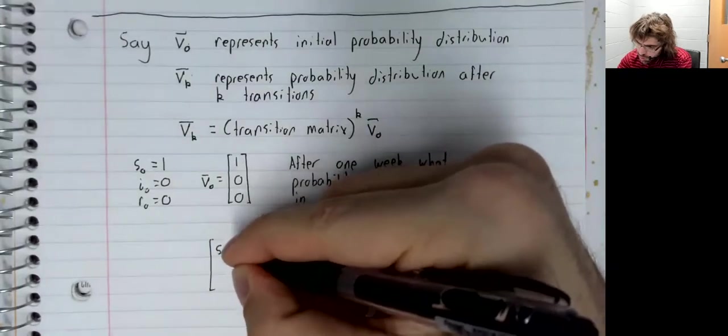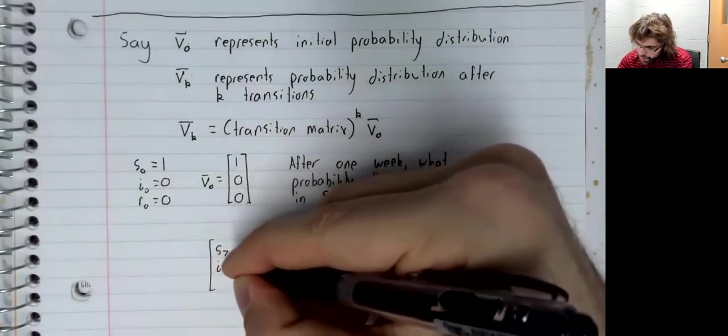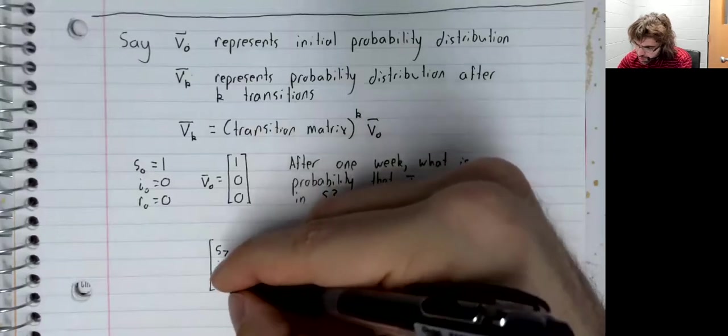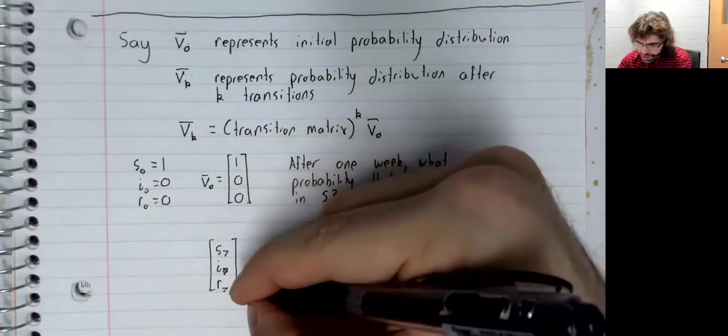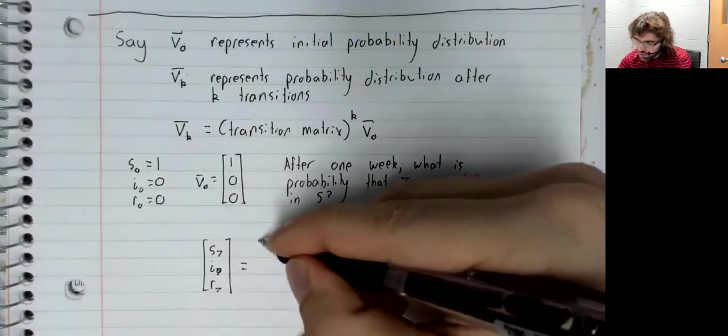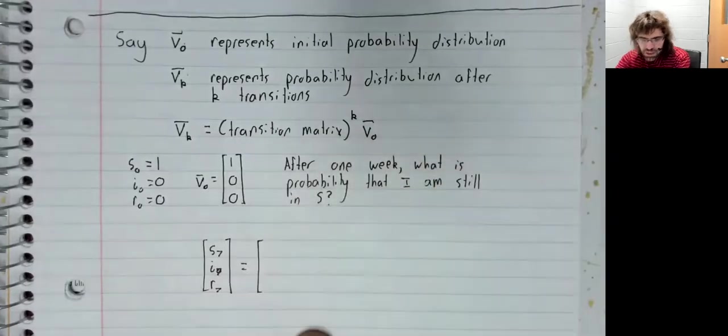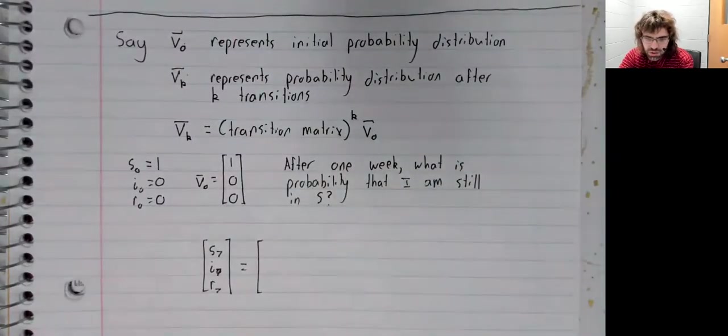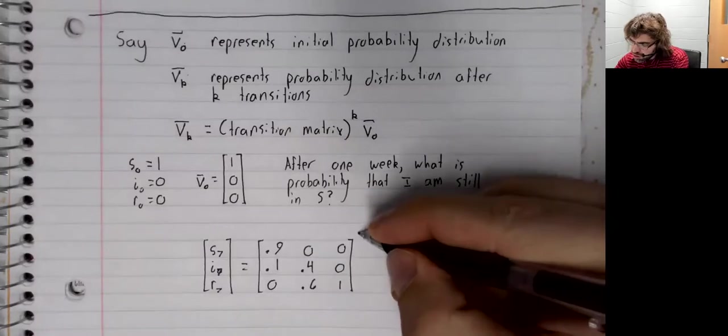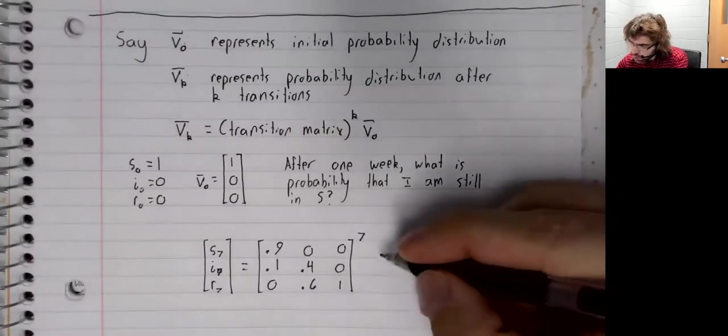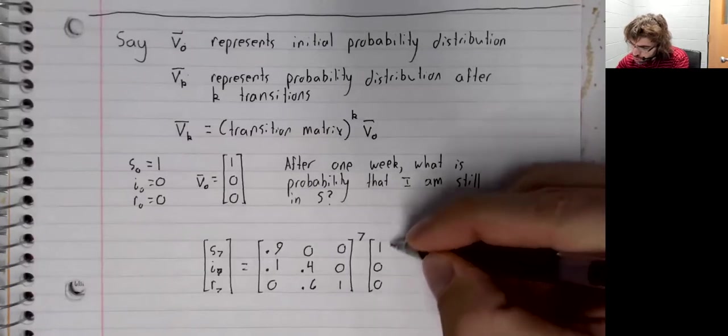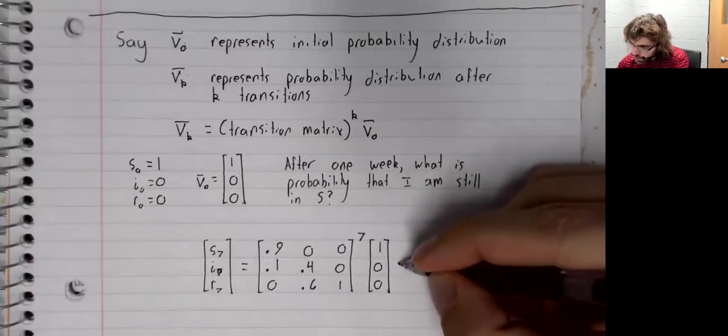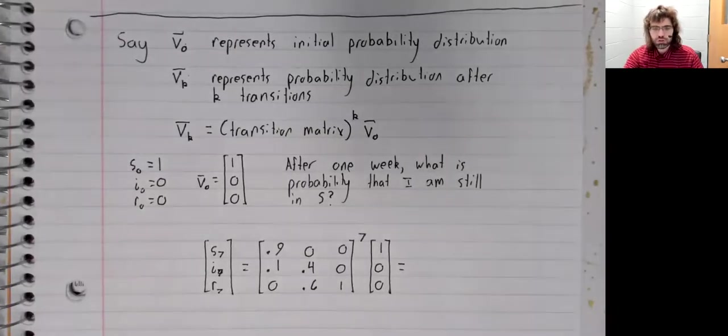So after seven transitions, the probability distribution will be this matrix raised to the seventh power times our initial probability distribution.